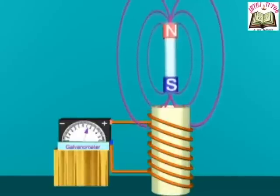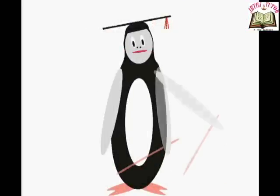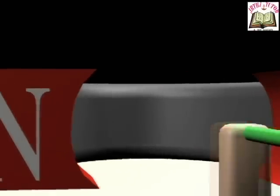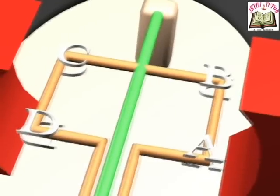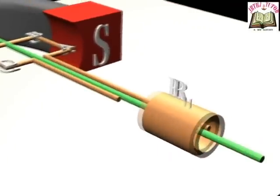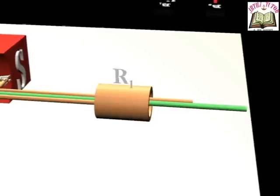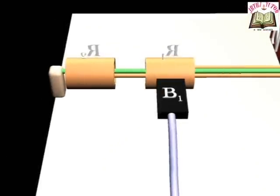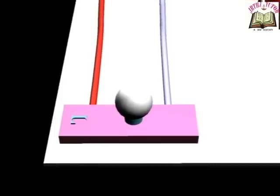Principle of dynamo: When a magnetic field linking with the conductor changes, an EMF is induced in the conductor. Construction of an AC dynamo: Take a strong horseshoe magnet N and S. Keep the rectangular copper coil ABCD on a soft iron core with slip rings called armature. The end D of the rectangular coil ABCD is connected to slip ring R1, and the end A is connected to slip ring R2. Carbon brushes B1 and B2 are connected to R1 and R2 respectively. The brushes are connected externally to a load L.